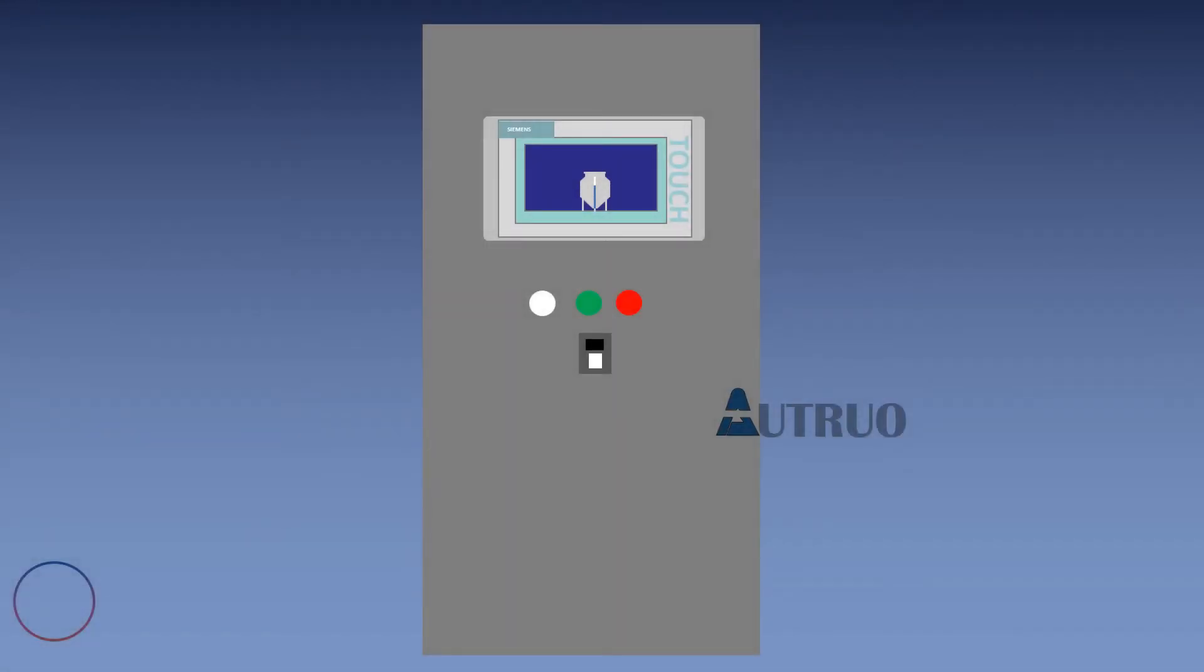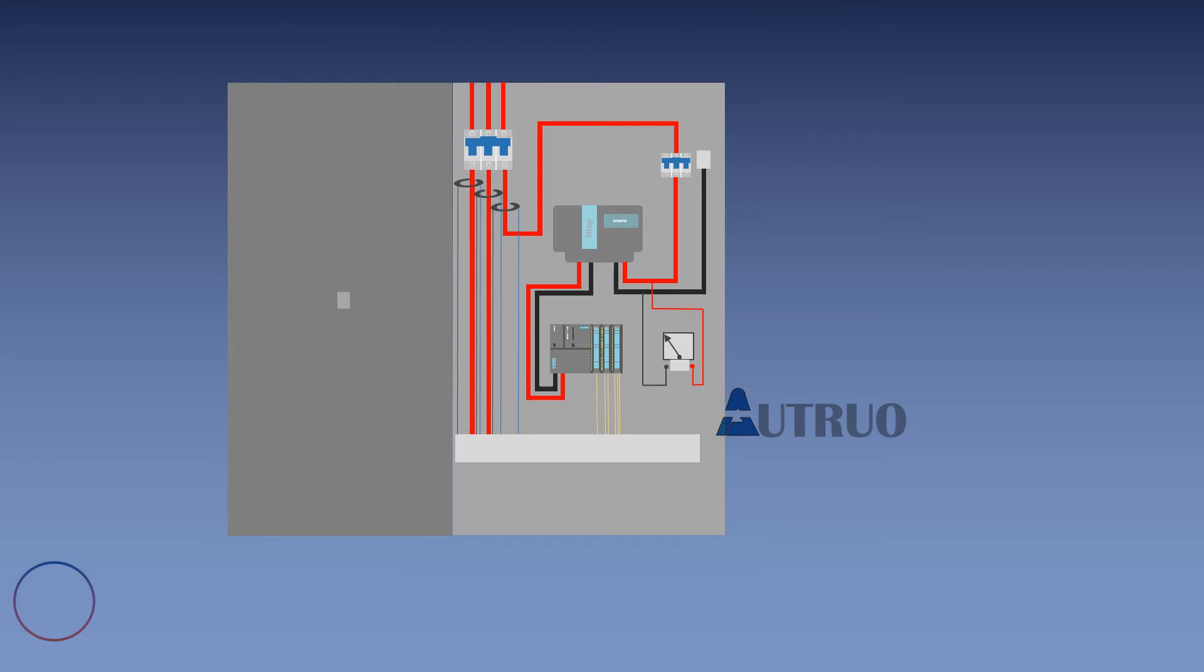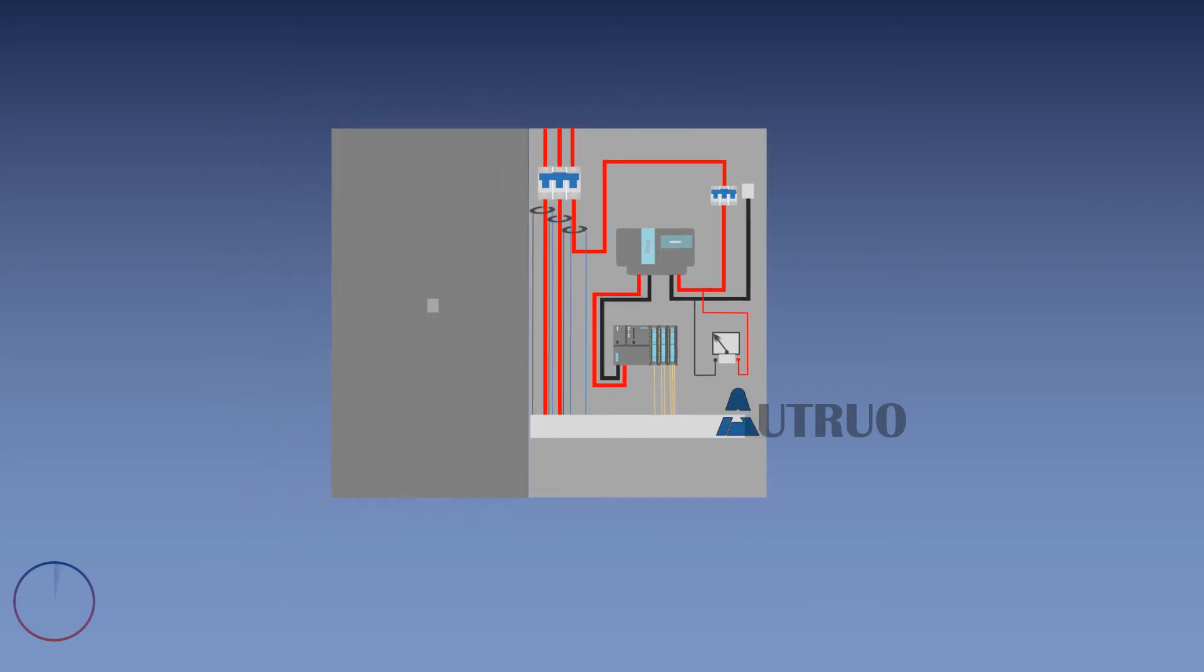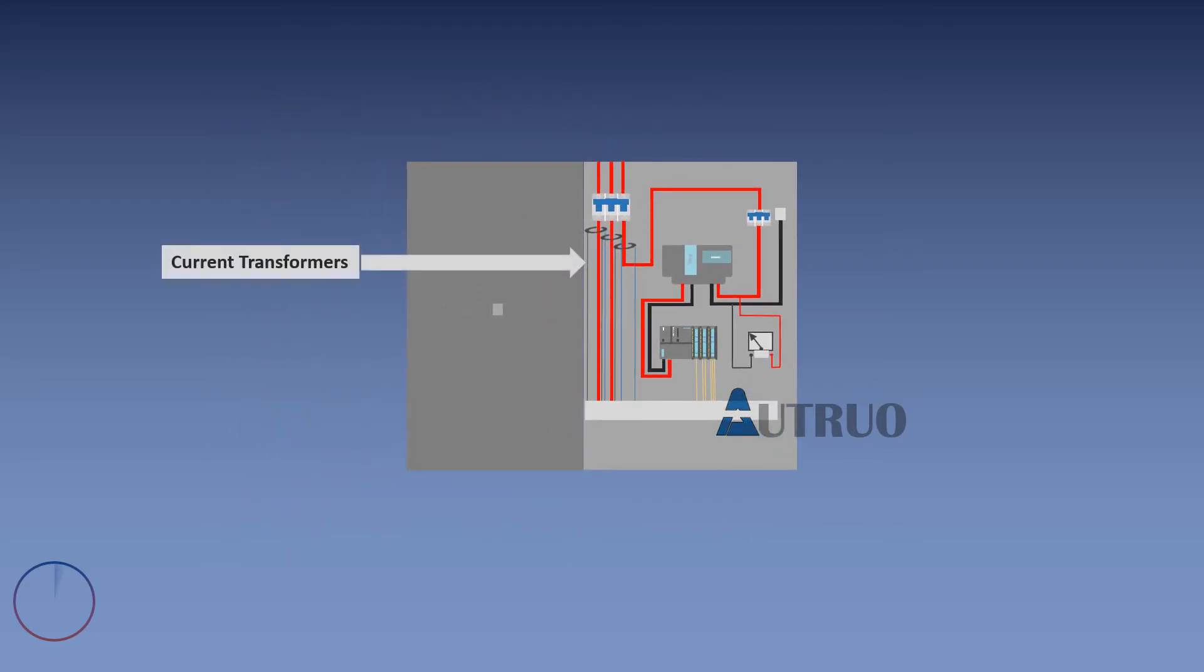As panel design gets more and more complex and robust, there comes some sort of protection. In this episode, we will be looking at how panels can be monitored and protected using current transformers, also known as CT, and voltage transformers. Stay tuned.